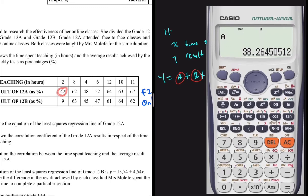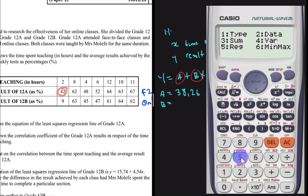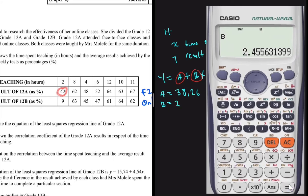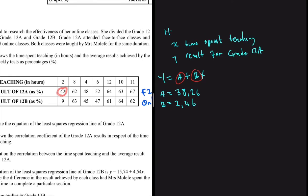We get a = 38.26. Now press AC, then SHIFT, 1, 5, and then 2 to retrieve b. We get b = 2.46. So the equation of the least squares regression line for grade 12A is: y = 38.26 + 2.46x. Just like that, we have calculated the least squares regression line.